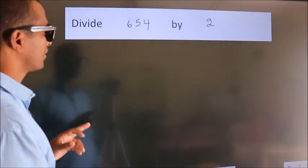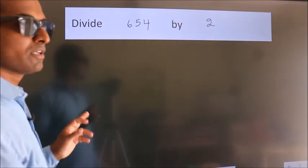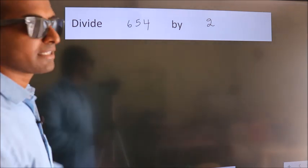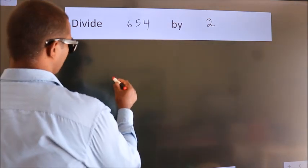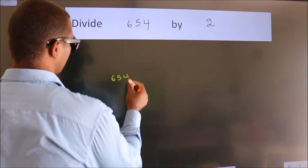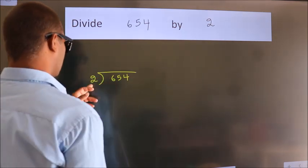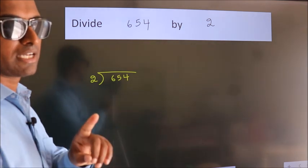Divide 654 by 2. To do this division, we should frame it in this way. 654 here, 2 here. This is your step 1.